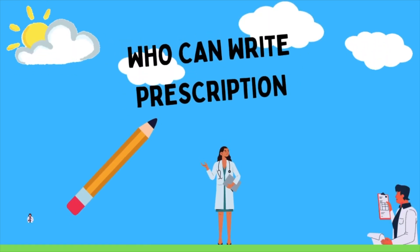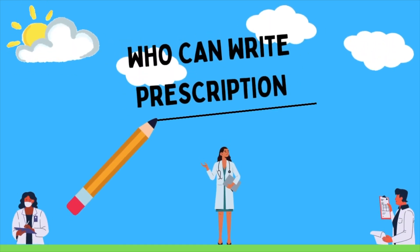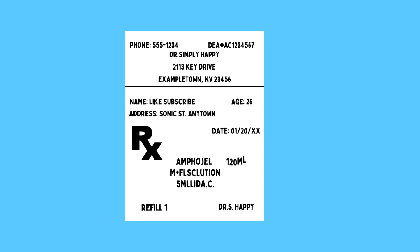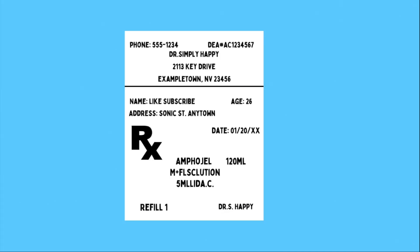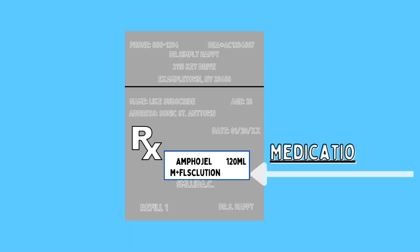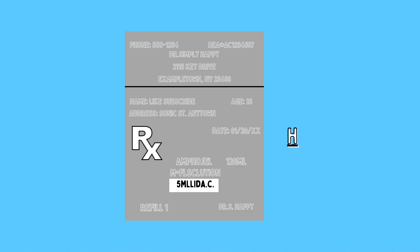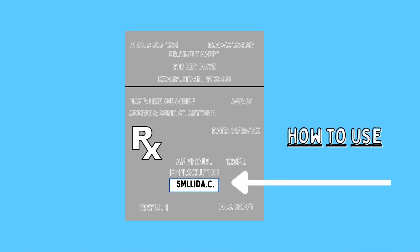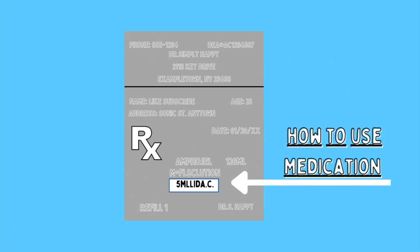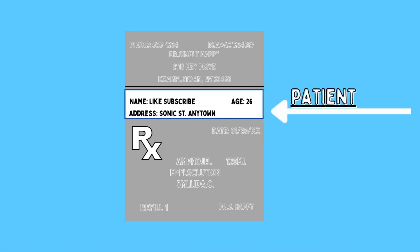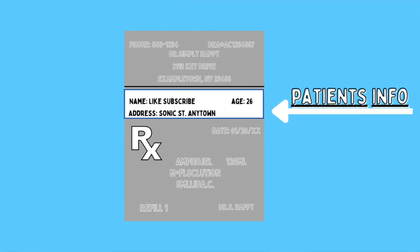Each state has its laws that say who can write prescriptions. A prescription always includes the following: the medication names, how to use the medication, frequency and route of administration, and the patient's information.